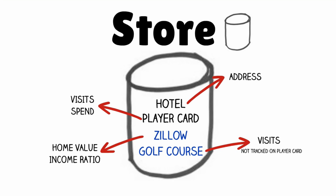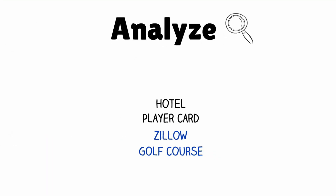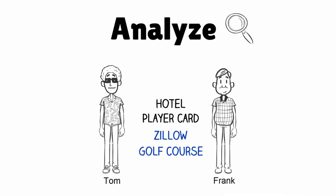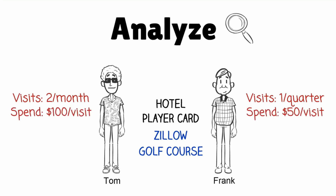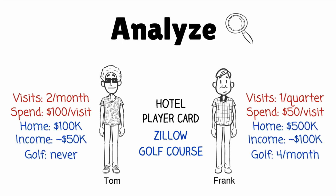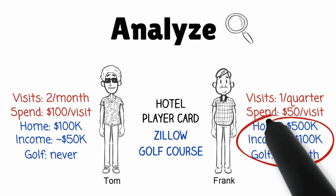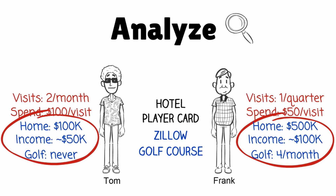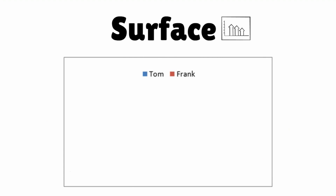Now the casino can use the data they've collected to help better understand two of their customers: Tom and Frank. Previously, the casino only knew the number of visits each made and the amount of money they spent each visit. With the new data sets, the casino is able to gather far more detail — for example, how frequently Frank visits their golf course, data that was never analyzed previously.